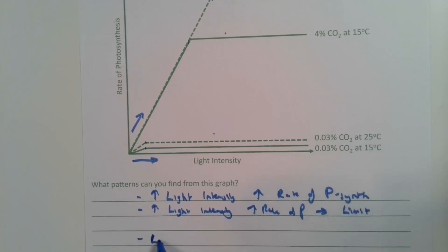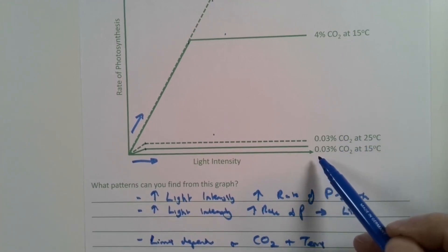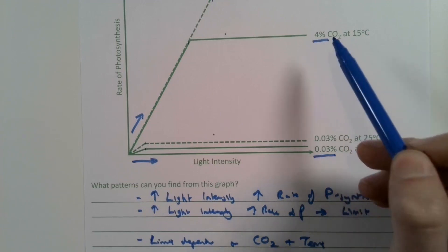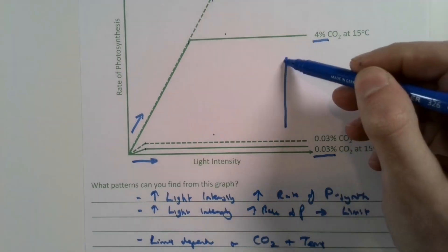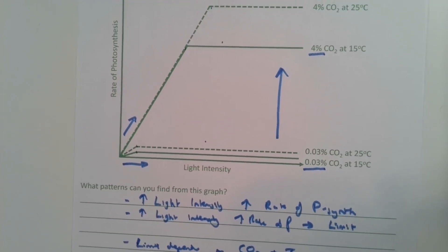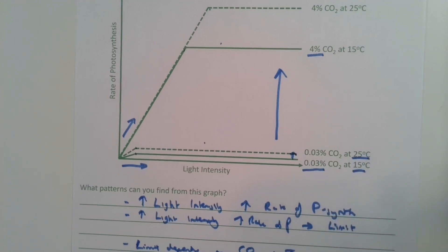So we would say that the limit depends on CO2 and temperature. We can see this because when we increase the CO2 levels, for example here at 0.03% up to here at 4%, you can see that the rate of photosynthesis has dramatically increased. Alternatively, when we change the temperature from 15 to 25, again though smaller, there's still an increase.